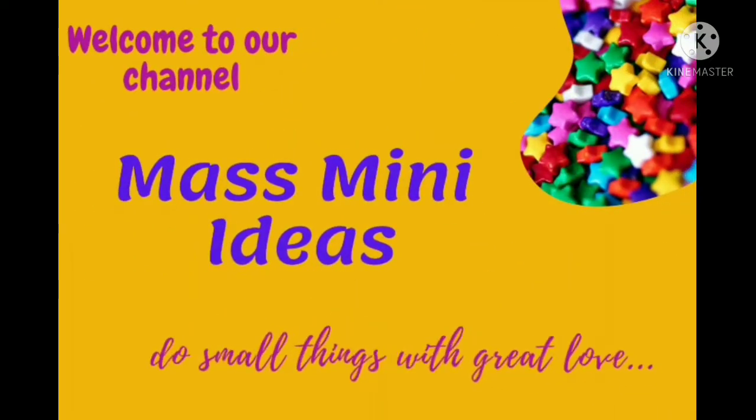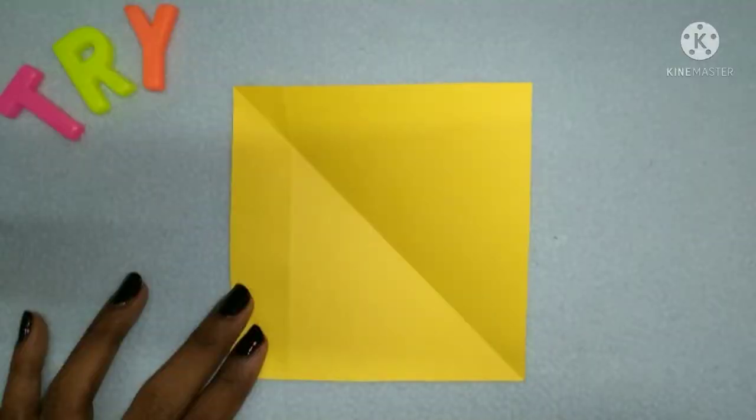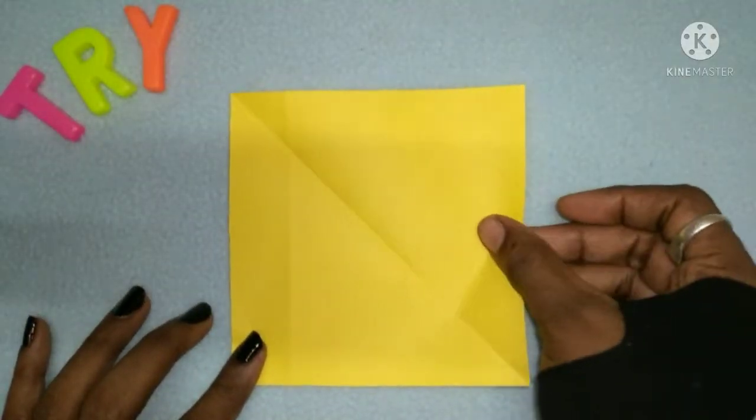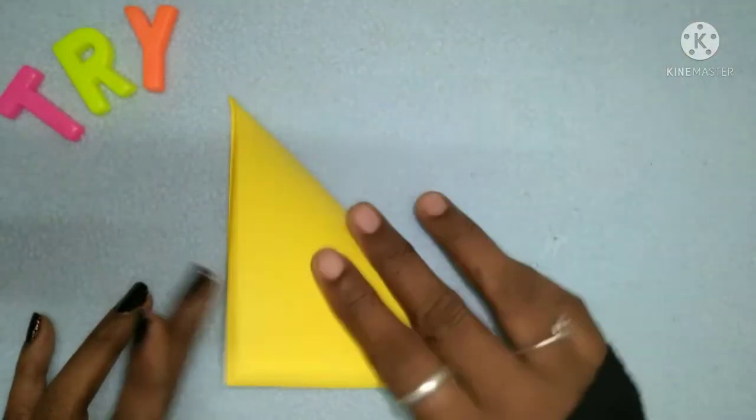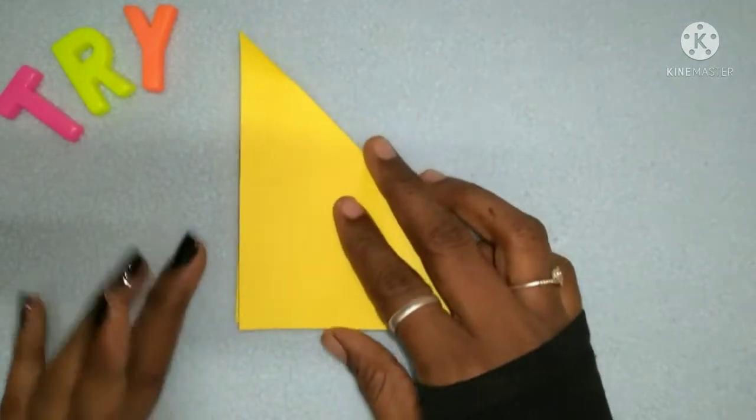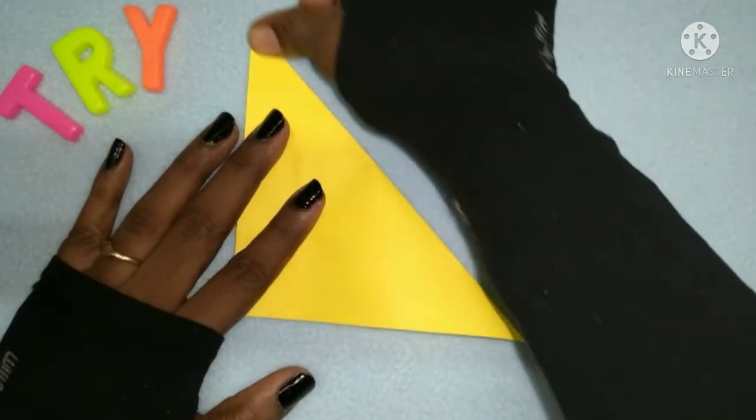Welcome back to MassMini Ideas. We are going to show you a bookmark. Start with a square-shaped paper, 12 x 12 or 13 x 13.